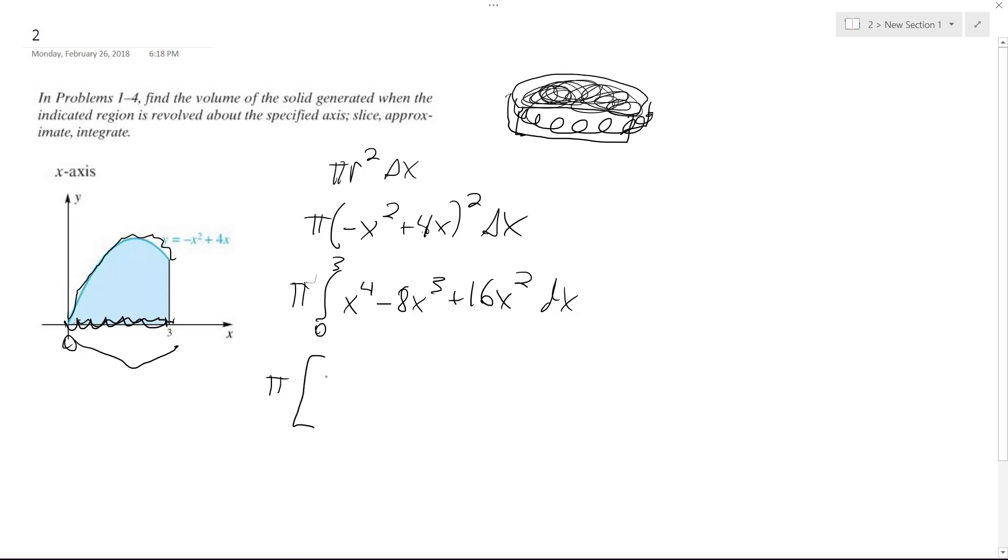Keep the constant out front. x⁵/5 - 2x⁴ + 16x³/3 from 0 to 3. So when we plug in 3 we get π times 243/5...